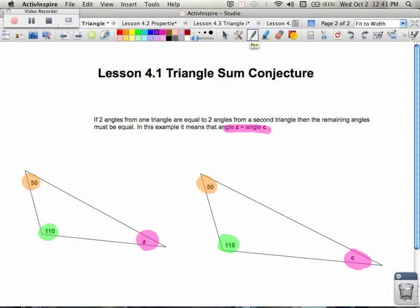if we took the 180 degrees we know exists inside of a triangle, subtract off the 110 degrees for the green angle, the 50 degrees for the orange angle, which would then leave us with 20 degrees for both angle z and angle c.